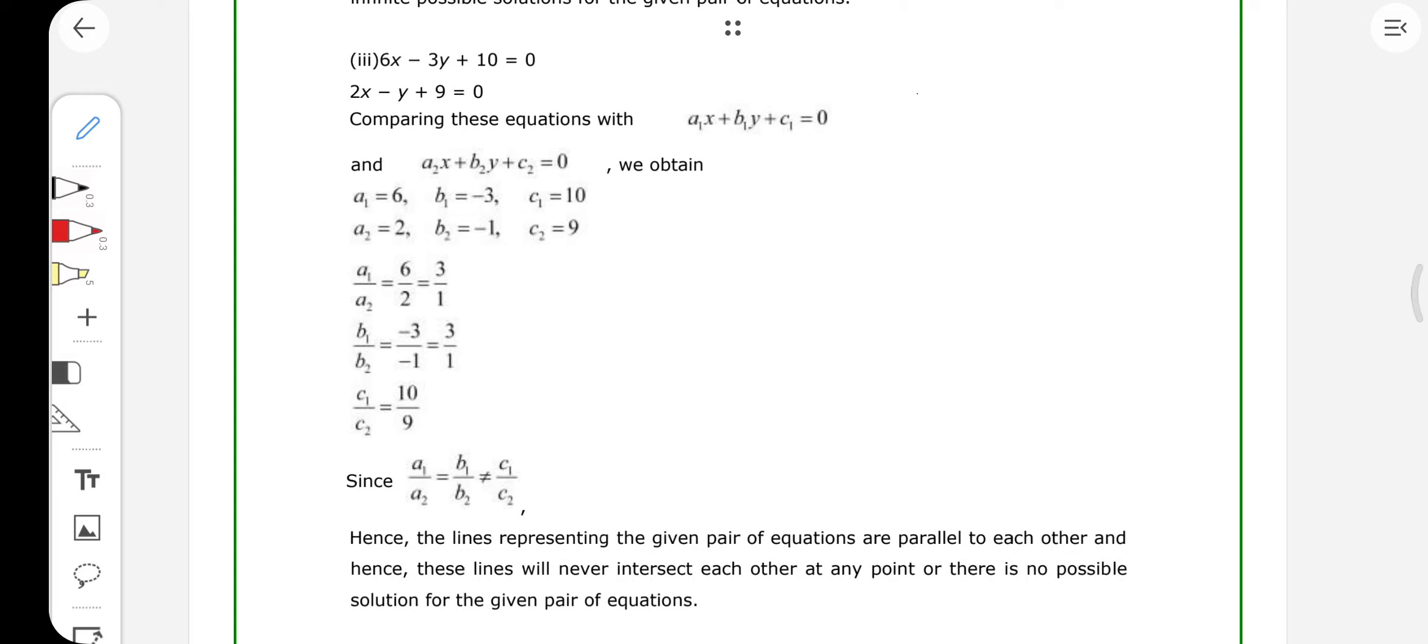In third part, we have two equations. First one is 6x minus 3y plus 10 equals 0. We will compare this equation with a1x plus b1y plus c1 equals 0. And second equation is 2x minus y plus 9 equals 0. We will compare this with a2x plus b2y plus c2 equals 0.